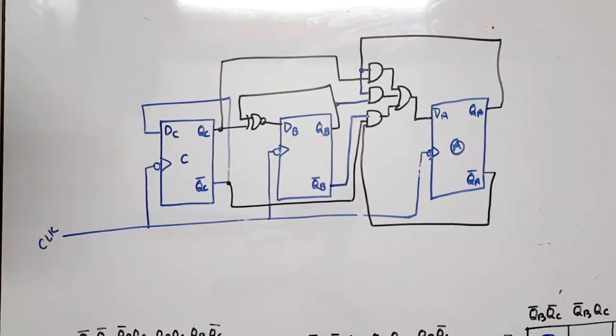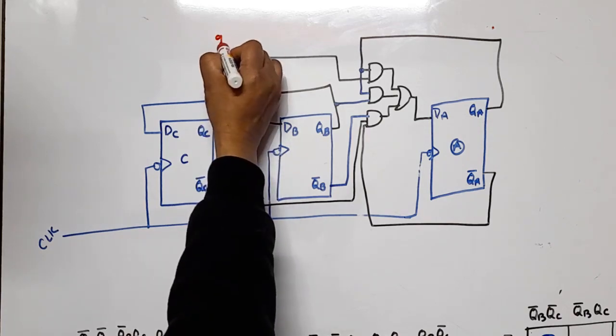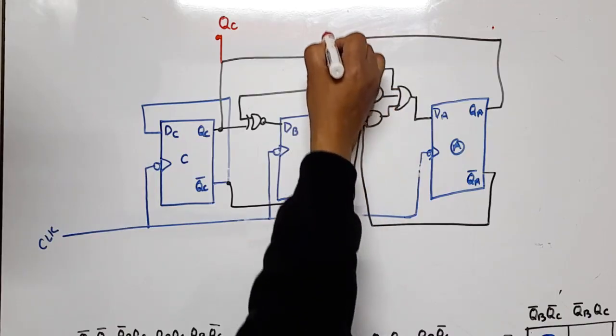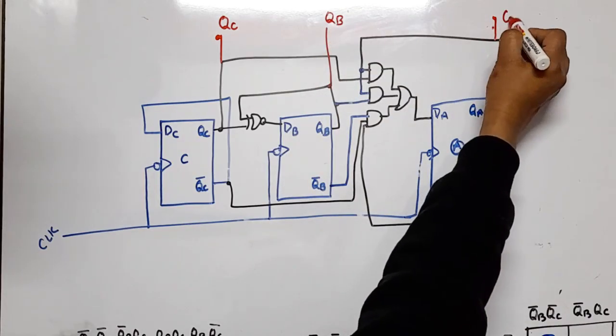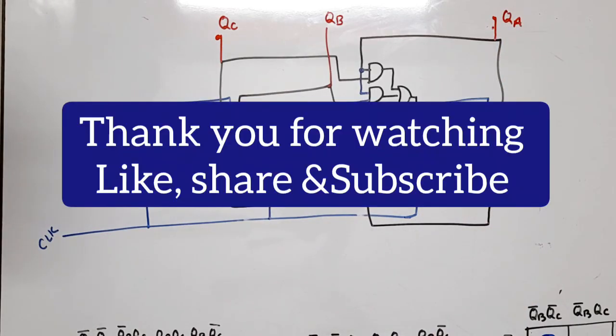Now the output. Here I am showing the output. This is QC, QB, and QA. And this is the final circuit of mod-8 or three-bit synchronous down counter using D flip-flop. Thank you so much.